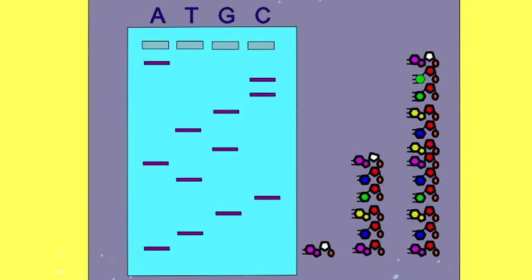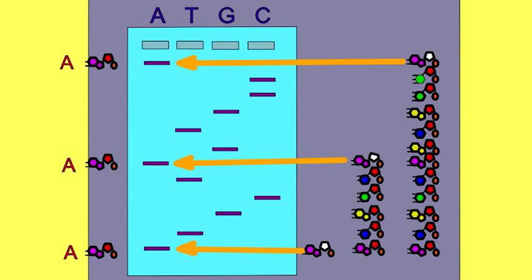Because adenine is located at three separate spots in this chain, the chain elongation stopped when DDATP was inserted, and so there are three separate bands corresponding to the three separate lengths of the adenine-ending fragments.